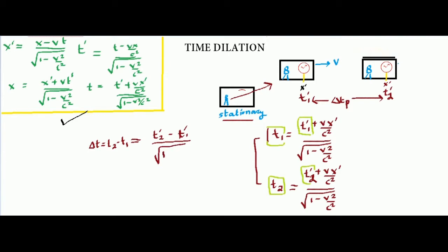This is something very amazing and at the same time very weird. The time interval in one frame is different from the time interval in the other frame. For example, if one second has elapsed in the stationary frame, the time that has elapsed on the moving clock can be just 0.5 seconds. So the time in the moving frame is running slower.